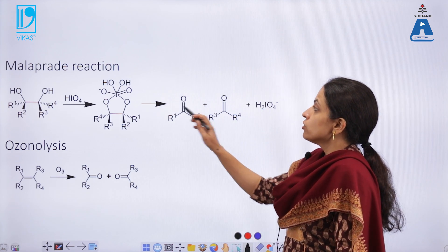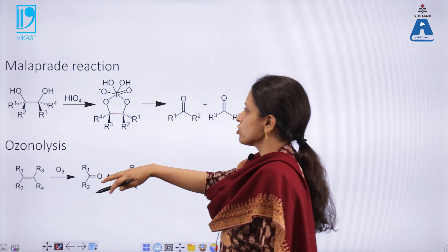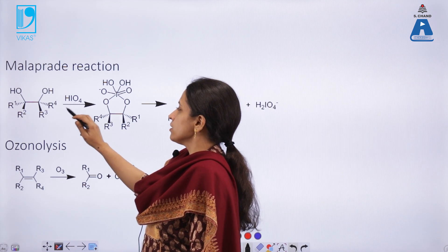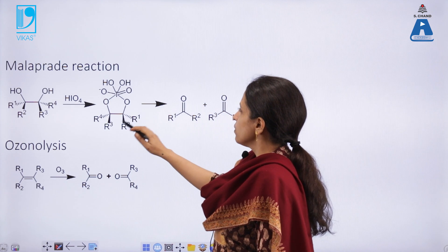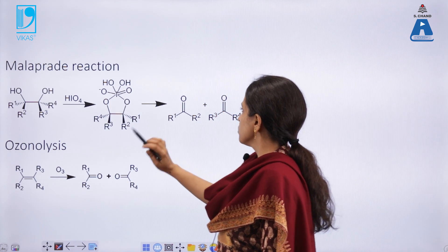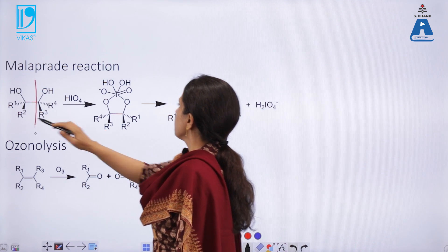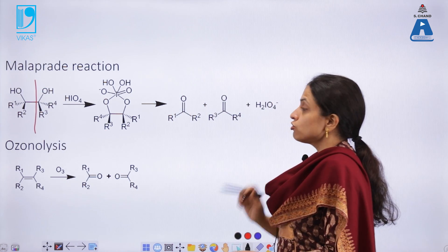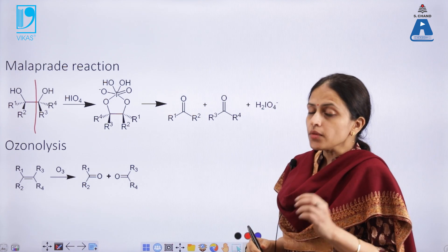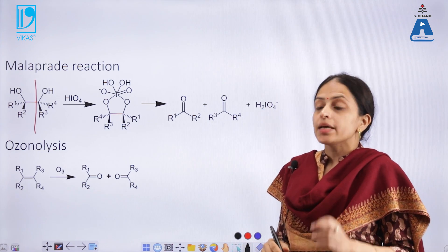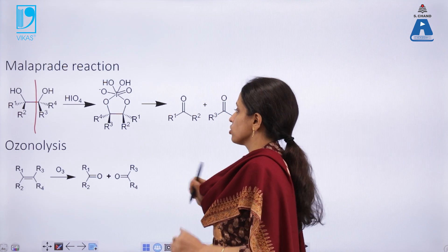Another important reaction seen in carbohydrate chemistry is the Malaprade reaction — the reaction of vicinal diols with periodic acid, proceeding through a cyclic transition state to produce two carbonyl compounds. This reaction is also used to determine the length of the carbon chain in saccharides and is an important versatile reaction.